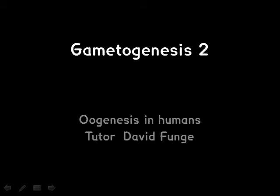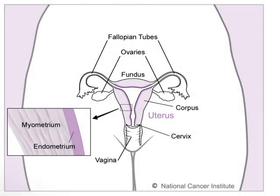In females, unlike males, there is a regular repeating cycle of gamete manufacture. Also, whereas in males spermatogenesis begins at puberty and is demand-led, in females the whole process has already begun before you are even born.